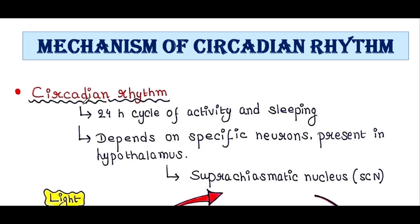Circadian rhythms follow a 24-hour cycle of activity and sleeping, synchronized with light and darkness. Circadian rhythm depends on certain specific neurons present in the hypothalamus. This region of the hypothalamus is known as the suprachiasmatic nucleus, or SCN.